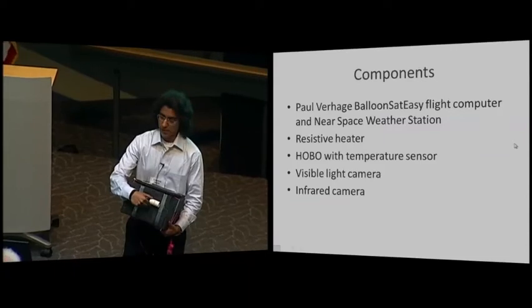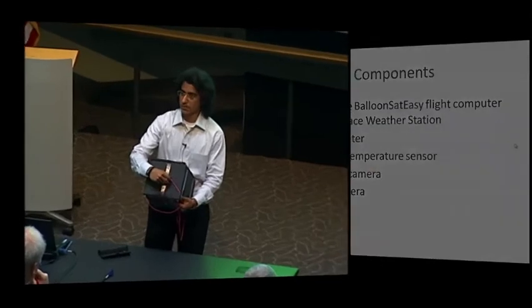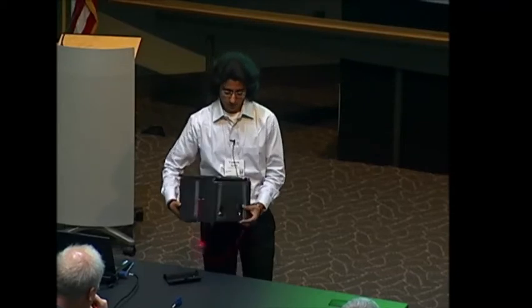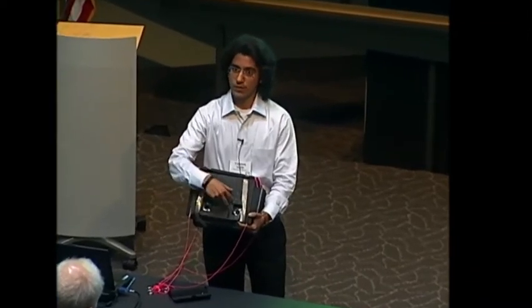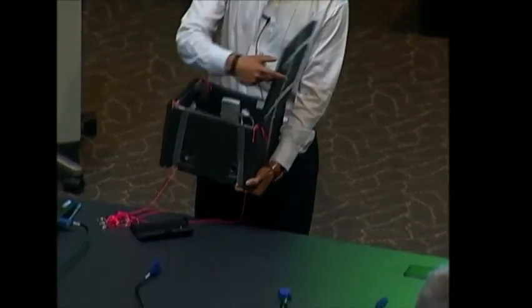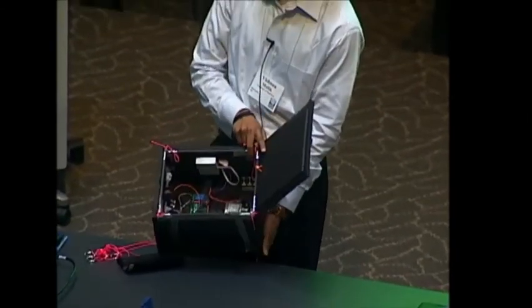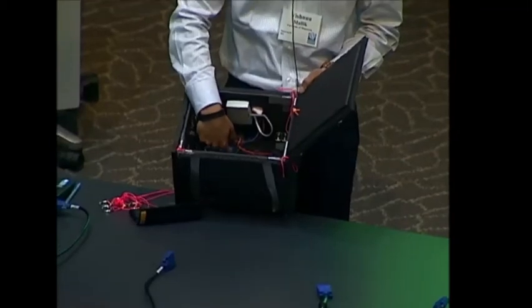This here is the weather station on the outside, and we have the commit pin for the flight computer. So as soon as we are ready to launch, we pull the commit pin, and the flight computer starts recording data. On this side, we have our two cameras pointing outwards — one was the visible light camera and the other was the infrared camera — and both cameras are programmed to take pictures at the same time. On the inside of the payload is the Hobo data logger, and here is our flight computer with the resistive heater.